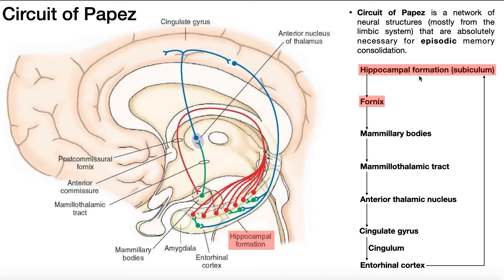We begin in the hippocampal formation — these cell bodies here in red. These cell bodies have axons that project together and run through a structure called the fornix. So all of this where you have these axons — this is the fornix. These axons moving through the fornix are going to synapse with cell bodies located in a structure called the mammillary body. There are two of them, a left and a right.